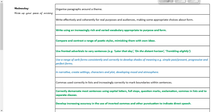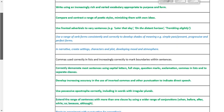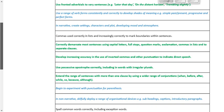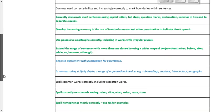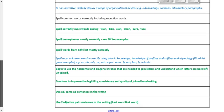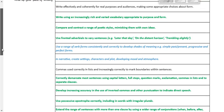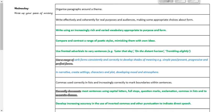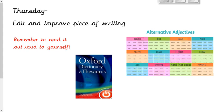On Wednesday you're going to write up your piece of writing. You have your success criteria for your learning intention, and there's also a link on the website to the Year 4 success criteria. The things in black are things you definitely should already be using, the green things are things you should be using most of the time, and the blue things are things you should start trying to use — those are your challenges. It's really useful because it breaks down exactly what you need to include in your writing.